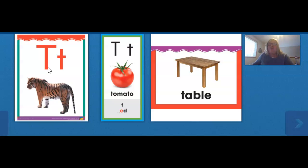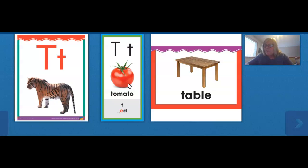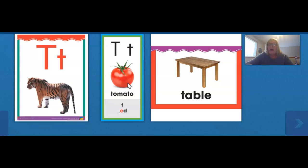Now I want you to look at the next picture. This is a picture of a tomato. Tomato also begins with T. Watch my mouth as I make the sound. T. My mouth is open a little. My tongue goes to the roof of my mouth, and then my tongue flicks forward while I push out air without using my voice. See if you can feel a small puff of air when you make the sound that stands for T. T. I just feel a small little bit of air.